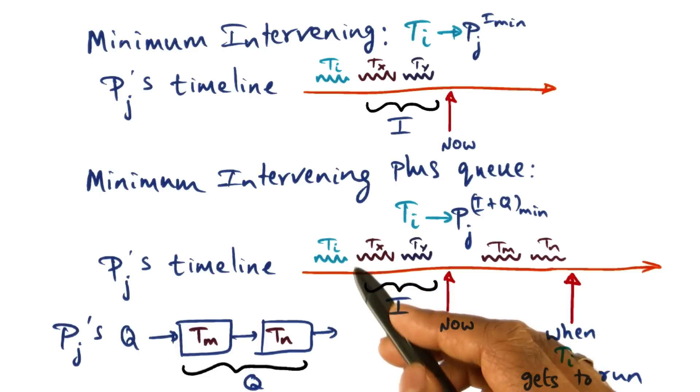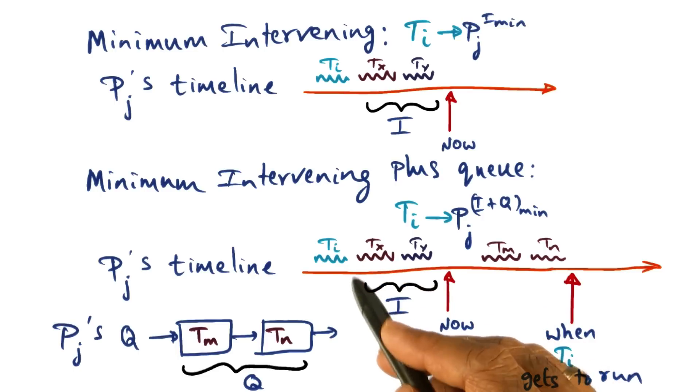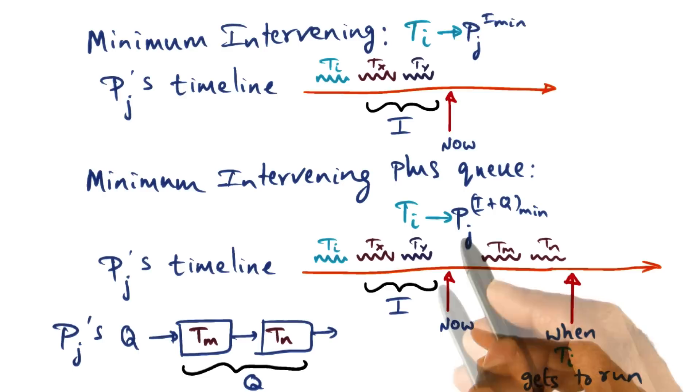So even though the affinity index that I computed at the point of the scheduling decision—this is a scheduling decision—at the scheduling decision, I made a decision to put ti on pj based on its affinity with respect to processor pj. But unfortunately,